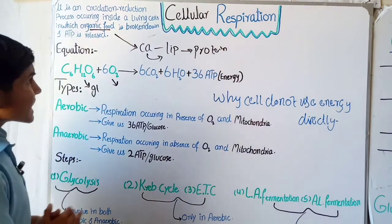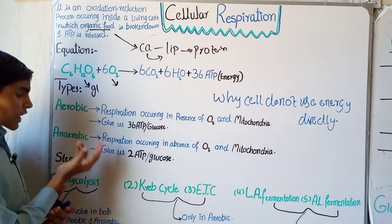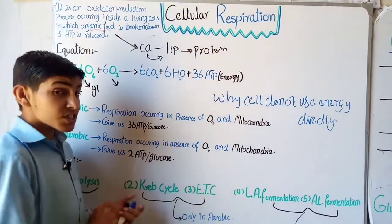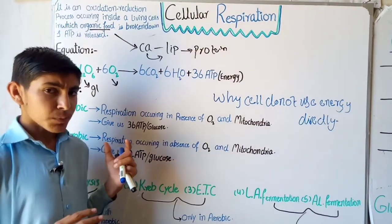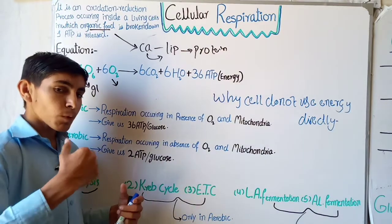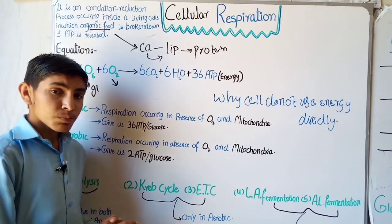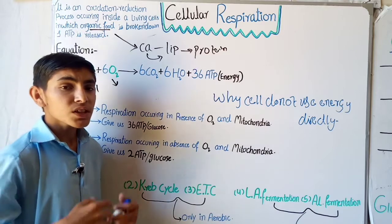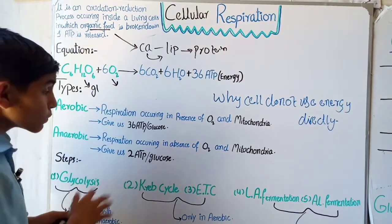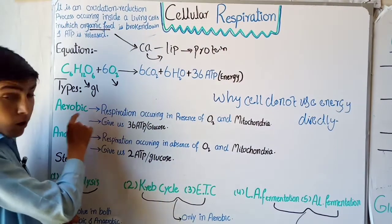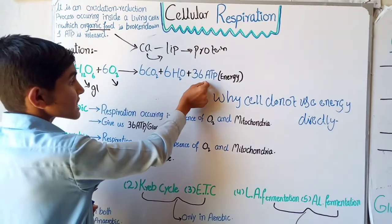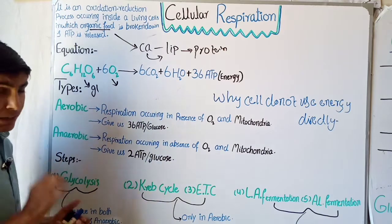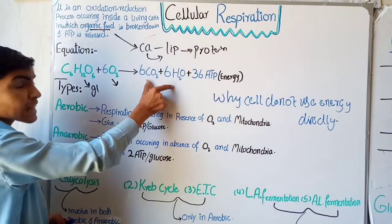Now let's talk about the types of cellular respiration. There are two types: aerobic and anaerobic. Aerobic, as the name suggests, is respiration occurring in the presence of O2 and also inside the mitochondria. This type occurs in every cell of our body and uses O2 in the mitochondria. It gives us 36 ATP per glucose molecule. The whole equation I have written is the equation of aerobic respiration, and this whole reaction occurs inside the mitochondria.